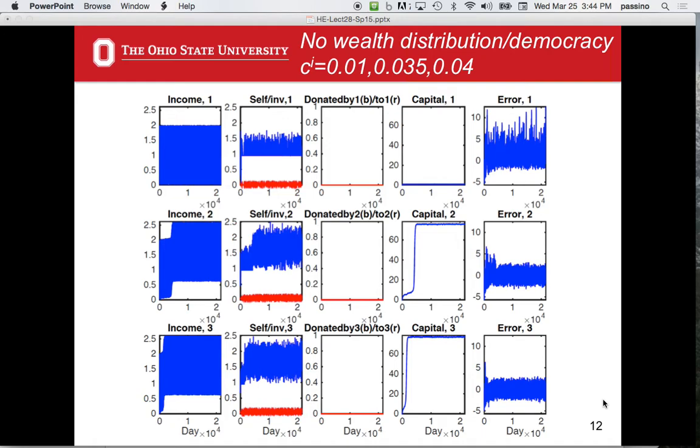So this is the donations. It just stays at zero because there's no wealth distribution. There's no democracy. Capital. Here, this is a little more interesting. So what happens here, this guy, remember, is the .01 case. This person is taking 1% of what they're spending in total and putting it towards capital. And that investment doesn't pay off. It just stays there. But because it's got the poor get poor curve in there.